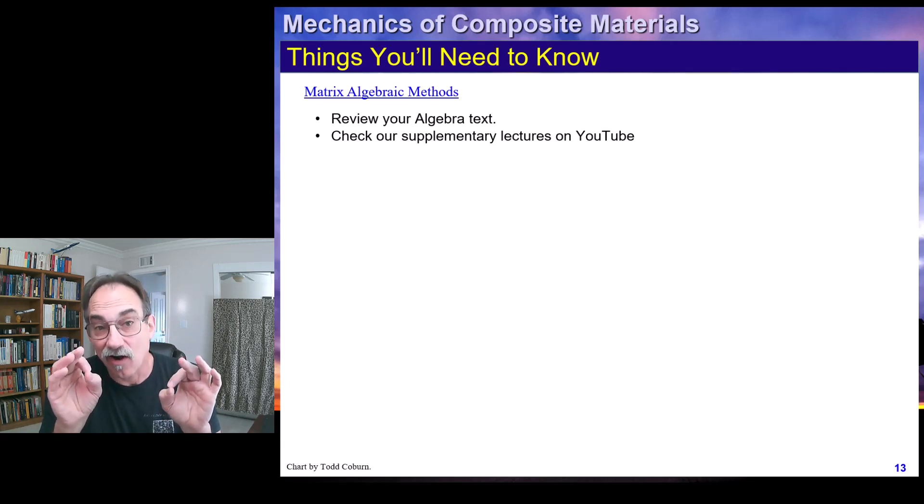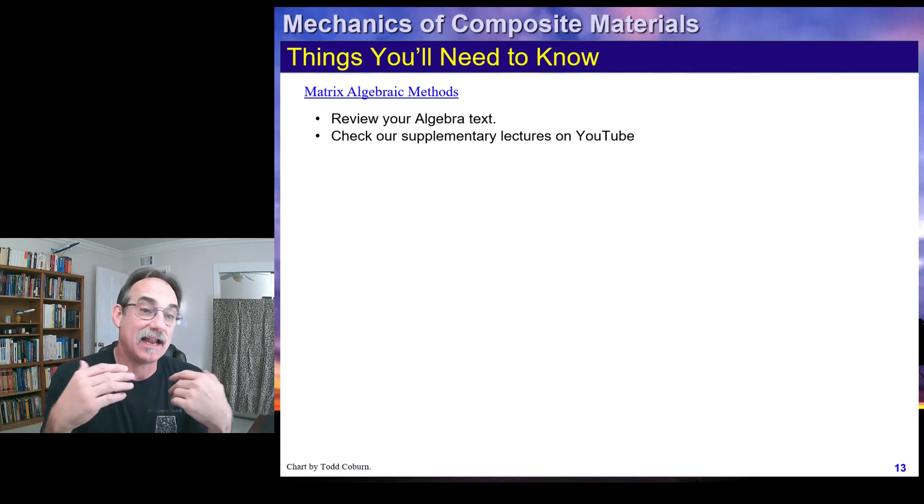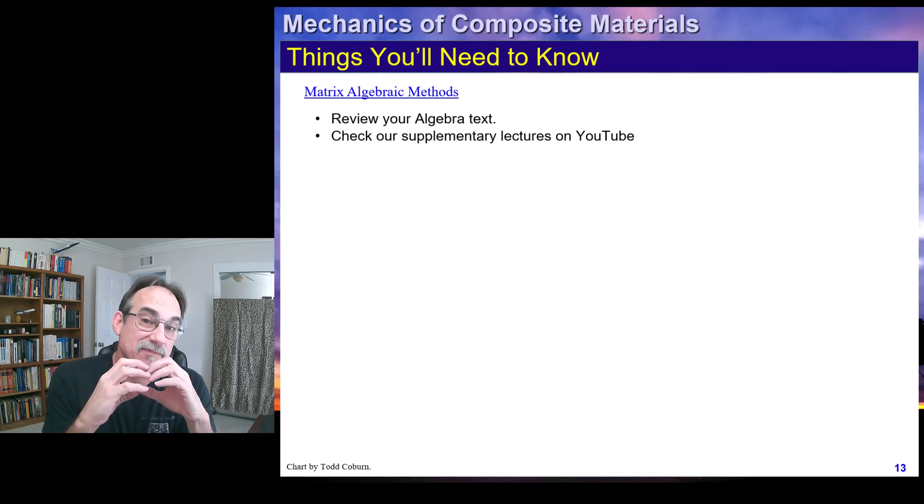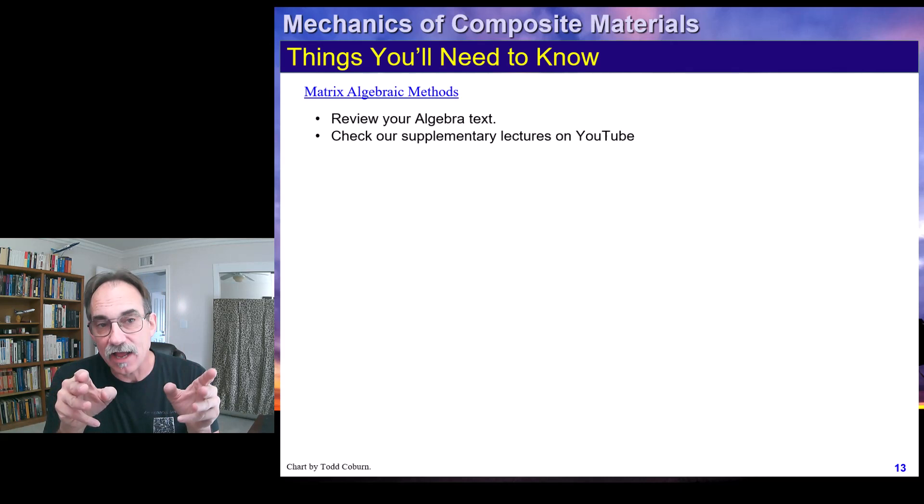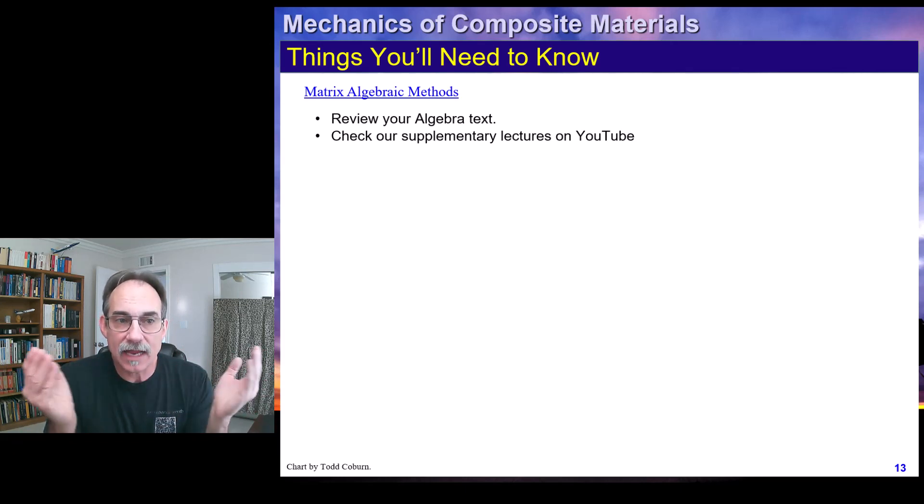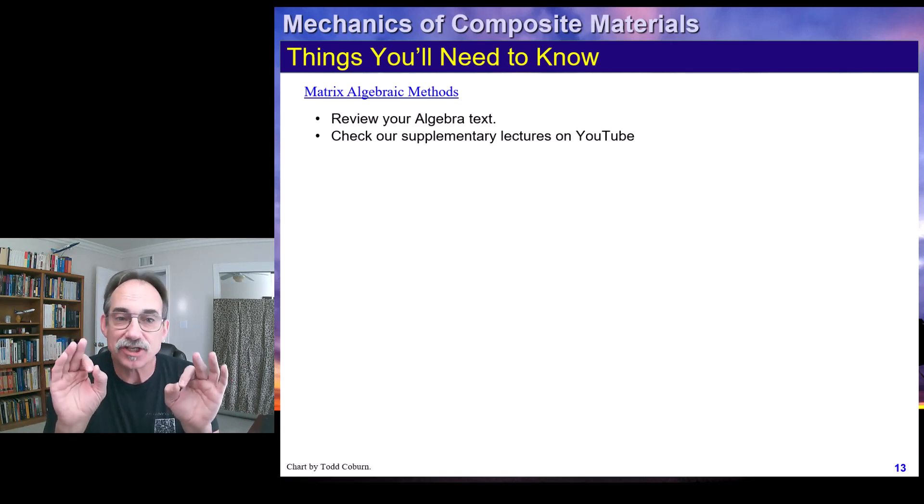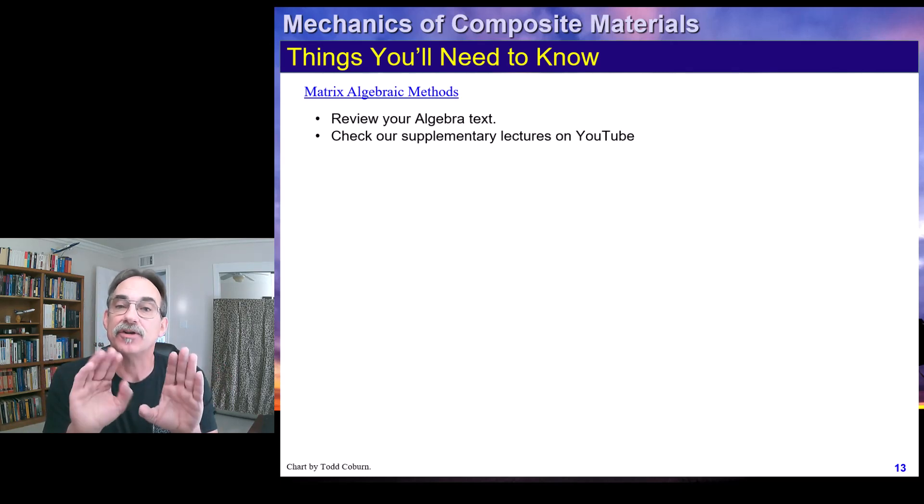This means we're going to be operating on matrices. Now, these are not that hard matrices. They're not like our finite element matrices, which can be huge. We're typically going to boil this down to a three by three kind of matrix or a six by six kind of matrix, which is going to give us three strain values and three stress values or six and six. So it's not that difficult.